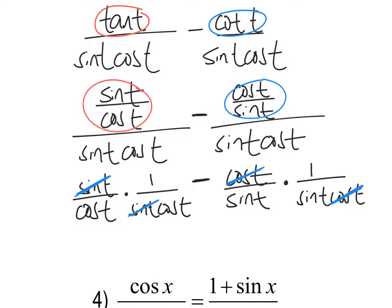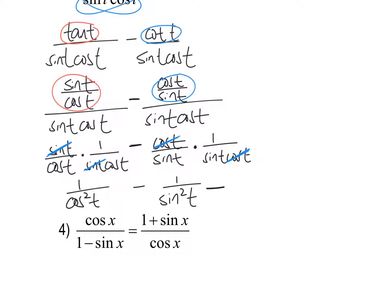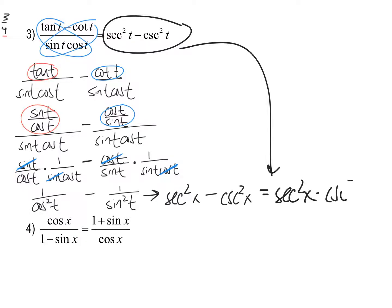What we're trying to do is simplify. Now I have one over cosine times cosine — that makes cosine squared — keeping the minus sign in the middle, and one over sine squared t on the other side. Isn't one over cosine squared the same as secant squared? And isn't one over sine squared the same as cosecant squared? And finally — that's exactly what I was trying to show. Left-hand side equals right-hand side. That was a little longer, but it was just fraction work.